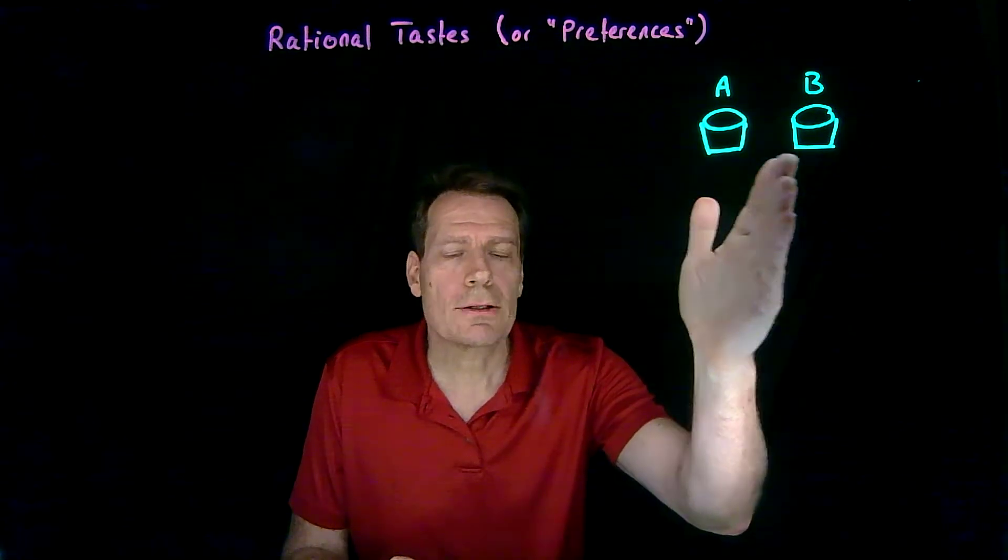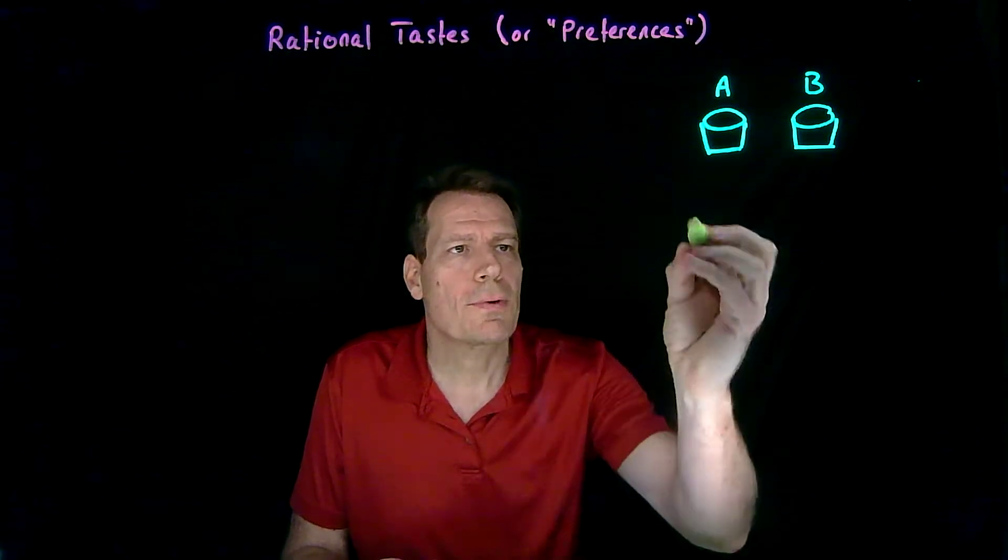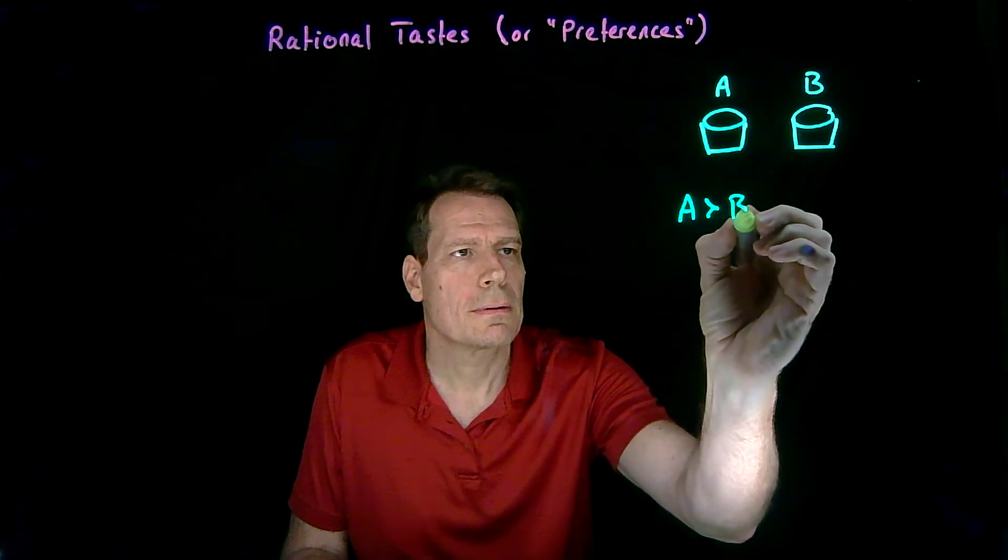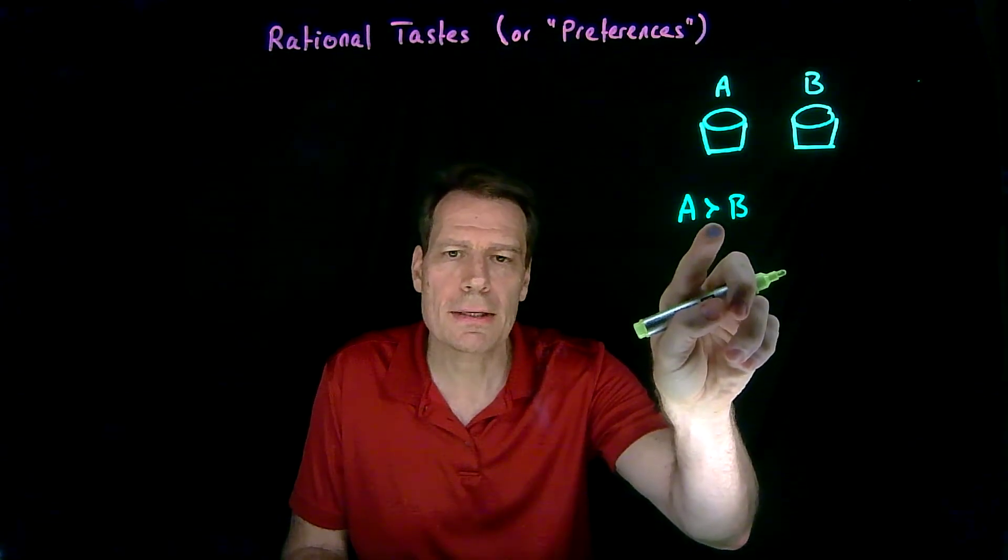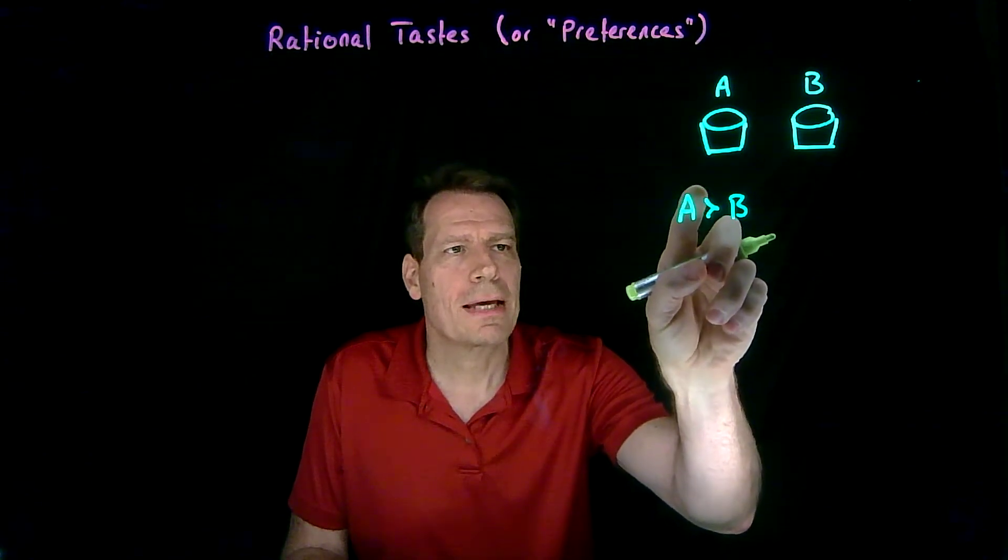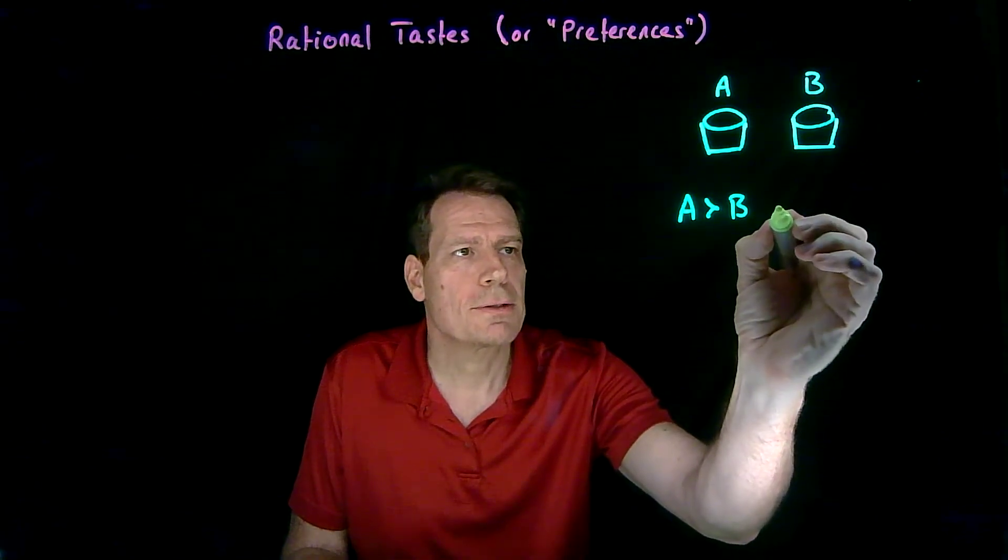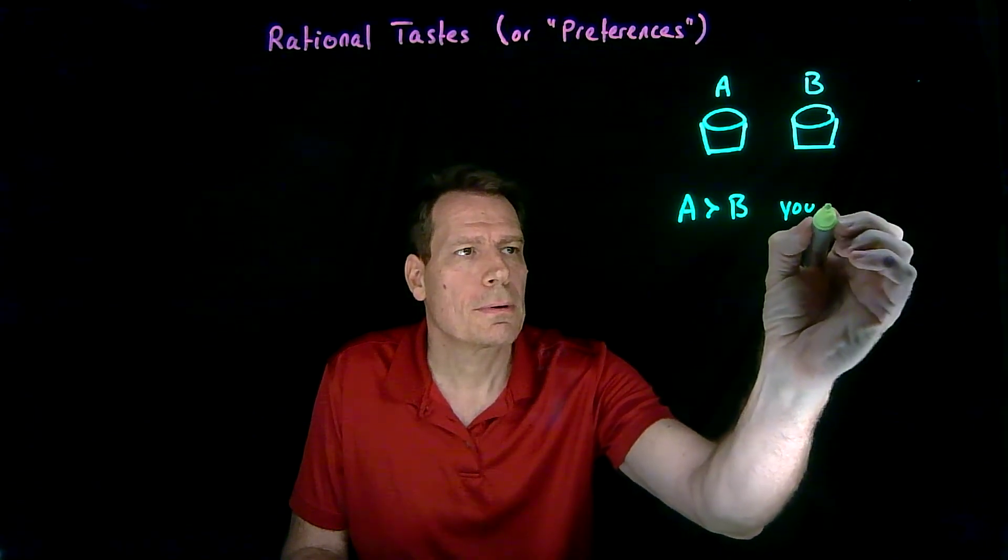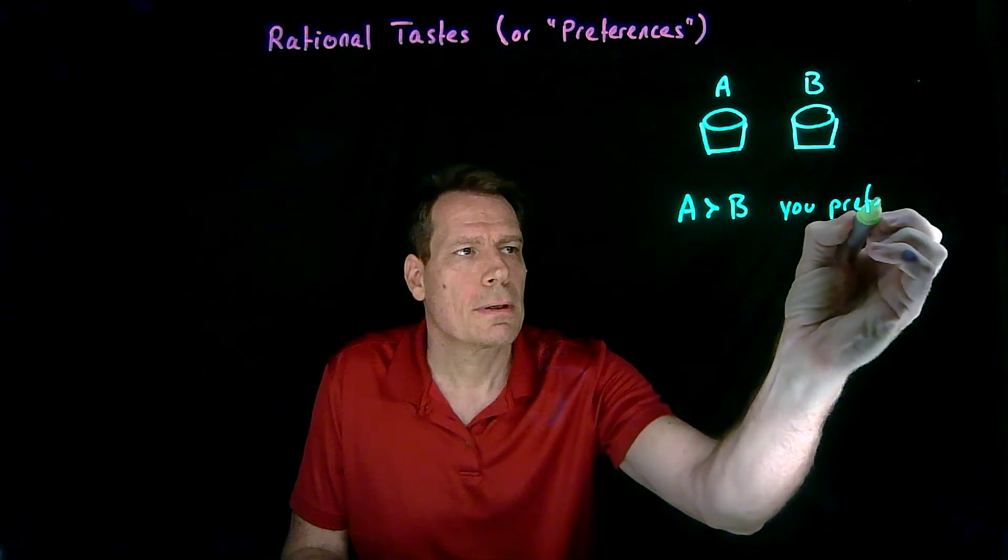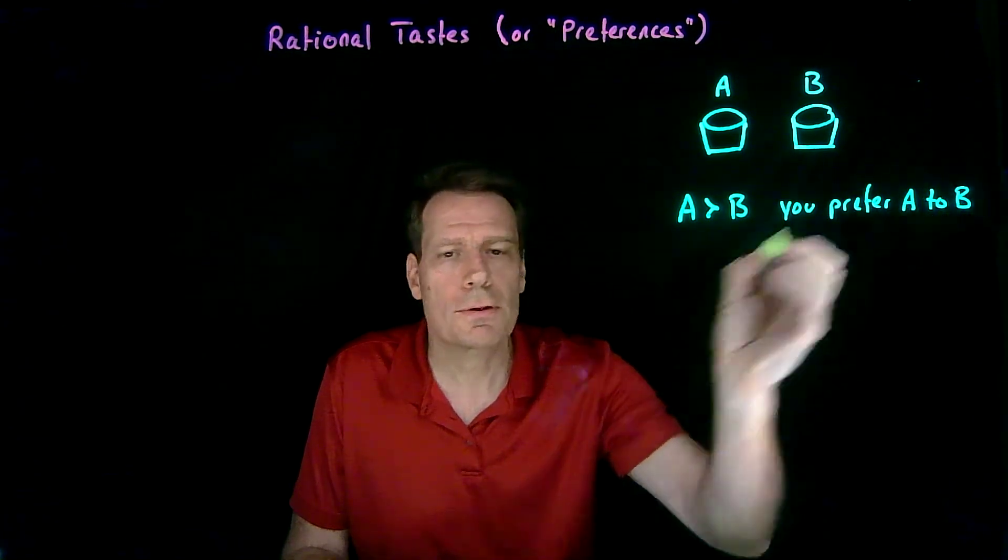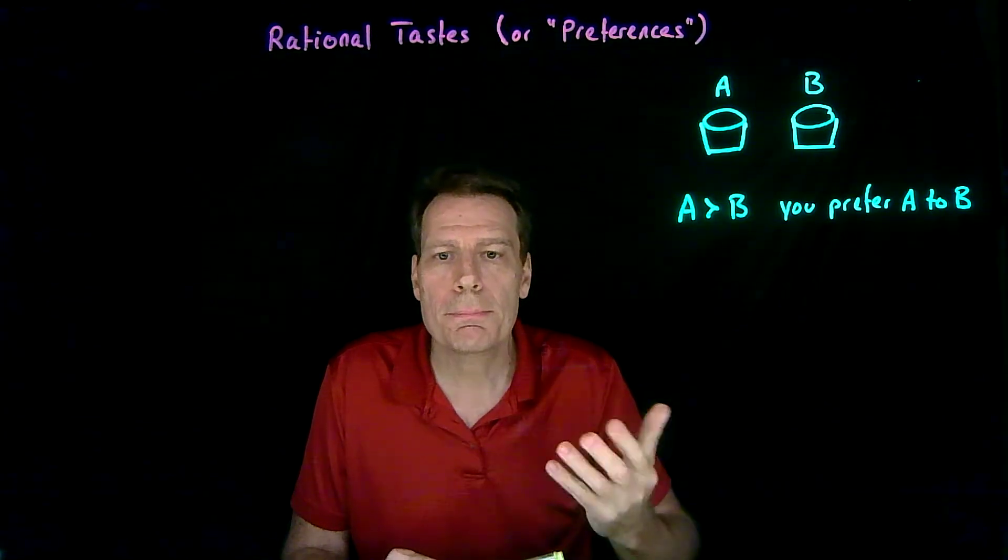If you prefer basket A to basket B, we're going to write this as follows. So this looks sort of like a greater than sign but it has some curvature to it, and the way we read it is we say this means you prefer the basket A to B. If you're given a choice between the two, you're going to pick A.